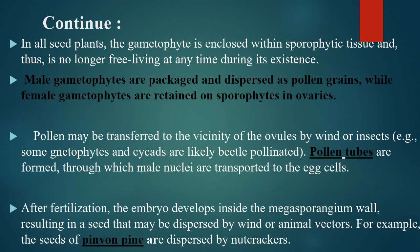Pollen may be transferred to the vicinity of the ovule by wind or insects. Some gnetophytes and cycads are beetle-pollinated. Pollen tubes are formed through which male nuclei are transported to the egg cells. After fertilization, the embryo develops inside the megasporangium wall, resulting in a seed that may be dispersed by wind or animal vectors — for example, the seeds of pines.